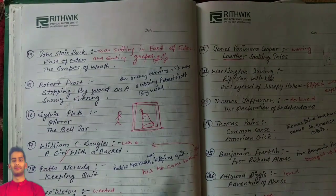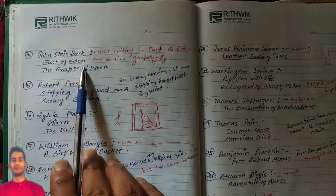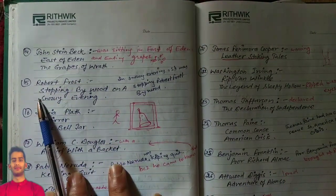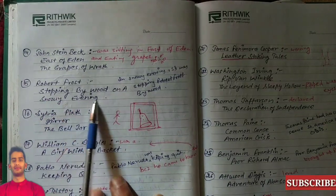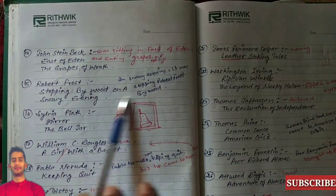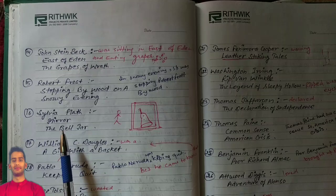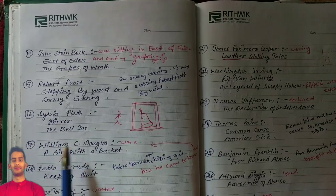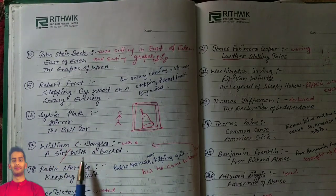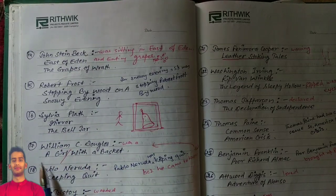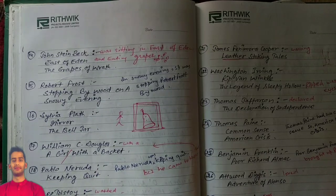John Steinbeck: East of Eden and The Grapes of Wrath. Robert Frost: Stopping by Woods on a Snowy Evening. Sylvia Plath: Mirror and The Bell Jar. William O. Douglas: A Girl with a Basket. Pablo Neruda: Keeping Quiet.